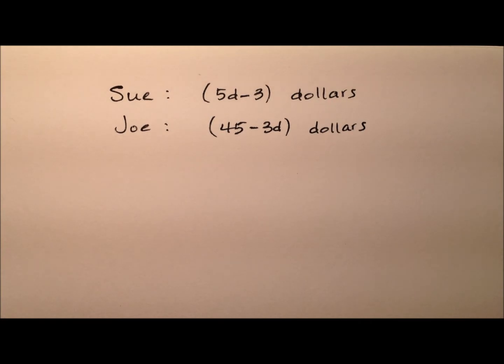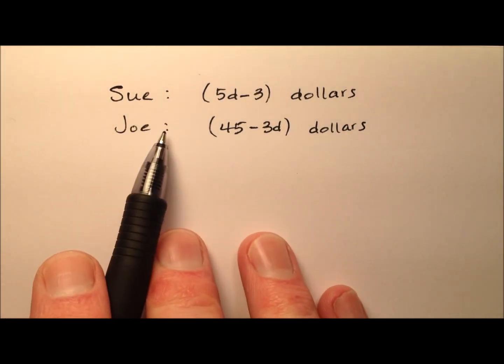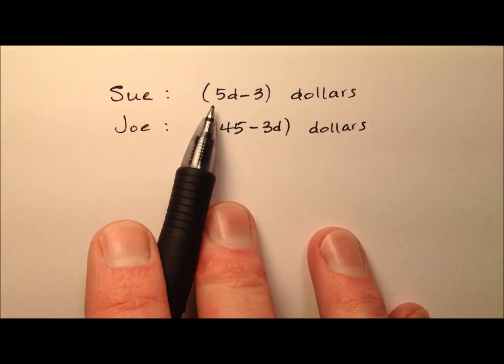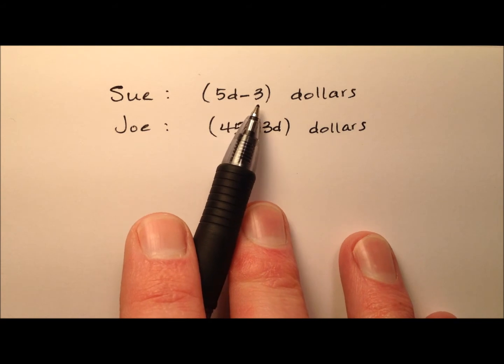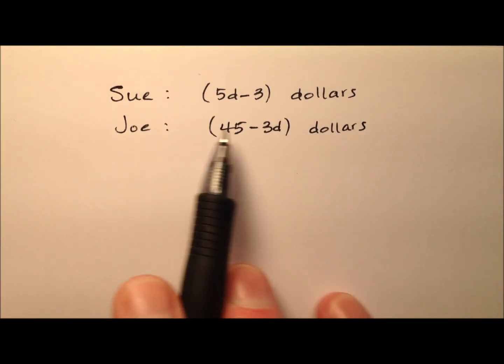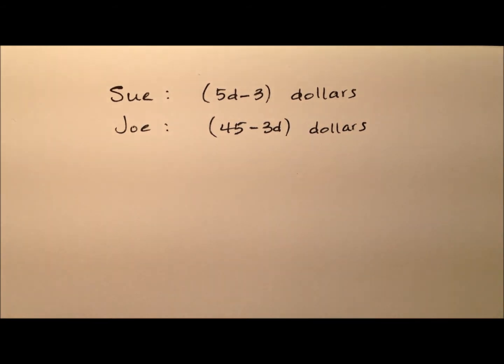In this example we're going to work through a word problem. Joe and Sue both have money. The amount of money that Sue has is given by the expression 5d minus 3 dollars, and the amount that Joe has is 45 minus 3d dollars.